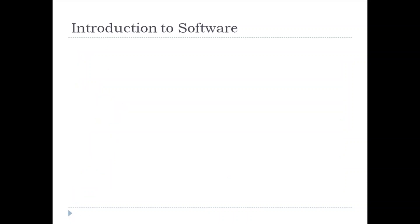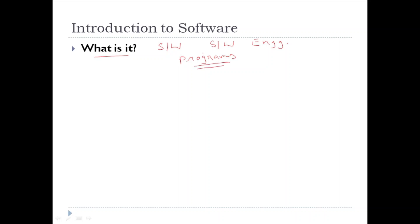Let us start with Introduction to Software. The first question is: what is it, i.e., what do you mean by Software or Software Engineering? In general, computer software encompasses programs that execute within a computer with proper documentation. Software Engineering encompasses a process, a collection of methods, and an array of tools that allow professionals to build high-quality computer software.